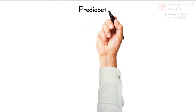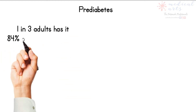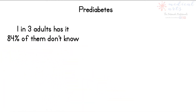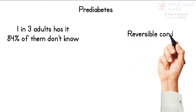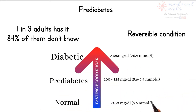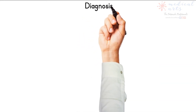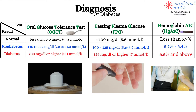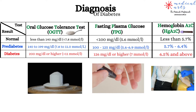Pre-diabetes is a common medical condition. According to the CDC, one in three adults in the United States has this condition, and 84% of them don't know about it. The good news is these cases are reversible — by simply following a better lifestyle, you can prevent or delay developing this disease. Pre-diabetes is defined as higher blood glucose levels than normal but not high enough to diagnose as diabetes. Having signs and symptoms of hypo- or hyperglycemia are important signals to get tested for diabetes.